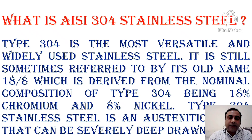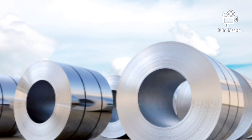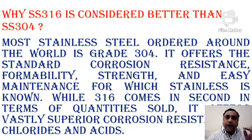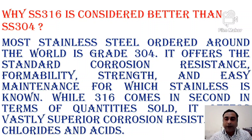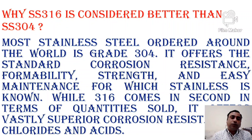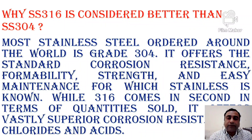Type 304 stainless steel is an austenitic grade that can be severely deep drawn. Most stainless steel ordered around the world is grade 304 — it has the highest sales of any steel grade — offering standard corrosion resistance, formability, stretch and easy maintenance. Grade 316 comes second in quantity sold but offers vastly superior corrosion resistance to chlorides and acids, making its acid resistance an important advantage.